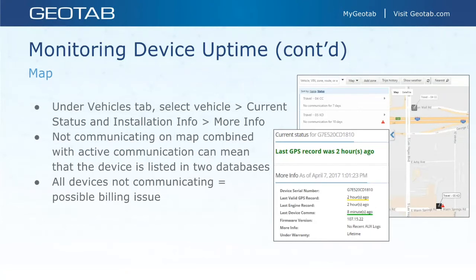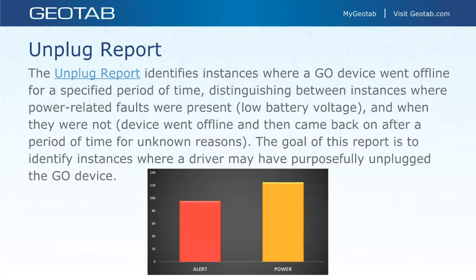You can also see communication status on the map — messages like 'no communication for seven days' or 'no communication for ten days' will appear there, in addition to the watchdog report. One thing to note: if you log in and literally all of your vehicles show the same 'no communication for X days' timeframe, that's probably a billing issue. You can also monitor this data through the vehicles list by selecting a vehicle, going into current status and installation info, and then selecting more info.